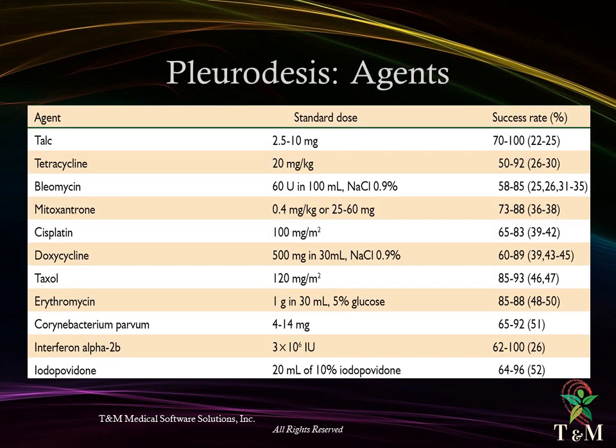Pleurodesis agents: talc powder is considered the standard of care with more than 90% success rate in achieving pleurodesis. However, in some countries talc is not available, and other agents are used instead, including tetracycline, bleomycin, iodopovidone, and others with variable degrees of success. The following table shows different agents used in clinical practice and their success rates.